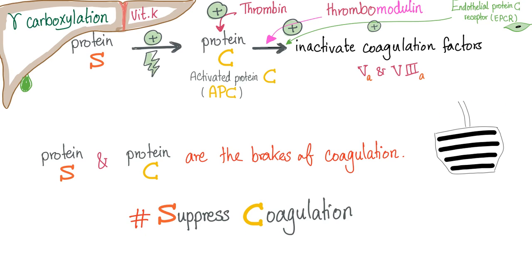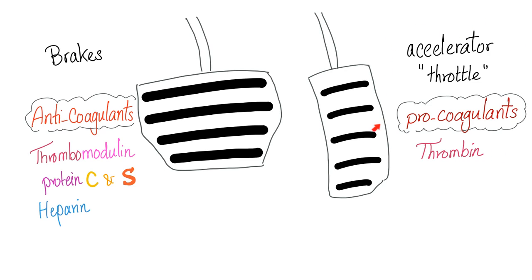There are factors that want you to thrombose and factors that don't want you to form a clot. The pro-coagulation factors include all of the coagulation factors, including thrombin. The anticoagulation factors — the brakes — are thrombomodulin, protein C, protein S, and heparin. Yes, you have natural heparin right now without a prescription. But warfarin? No — warfarin is not naturally occurring in your body, but heparin is.